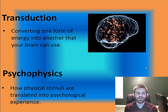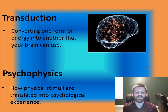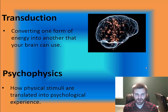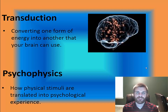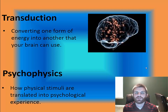Our sensory processes depend on two things. The first is transduction — converting one form of energy into another that the brain can use. Then the brain engages psychophysics, which looks at how physical stimuli producing sensations are translated into a psychological experience. For example, drums activate sound waves our ears detect, giving us sound; but psychophysics helps us identify that as a drum set rather than, say, a series of gunshots.